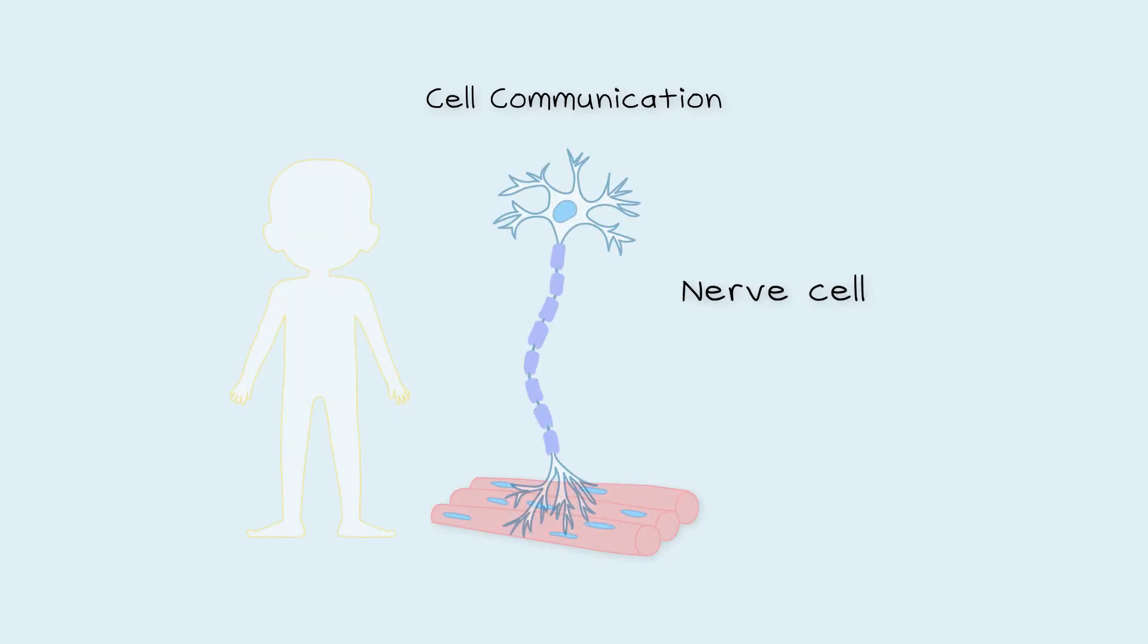In order to work together, cells must be able to talk to each other. If we want to move our leg, a nerve cell or motor neuron must send a signal from our brain to our leg to make it move.